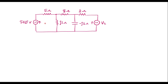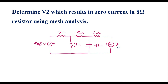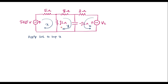Let me mark the loop currents first. Here we have 3 loops. Let me assume current through this loop is x, current through this loop is y, and current through this loop is z. Now, it is said that current through the 8 ohm resistor is zero. According to the definition, the current through the 8 ohm resistor is y. Therefore, y is equal to zero.